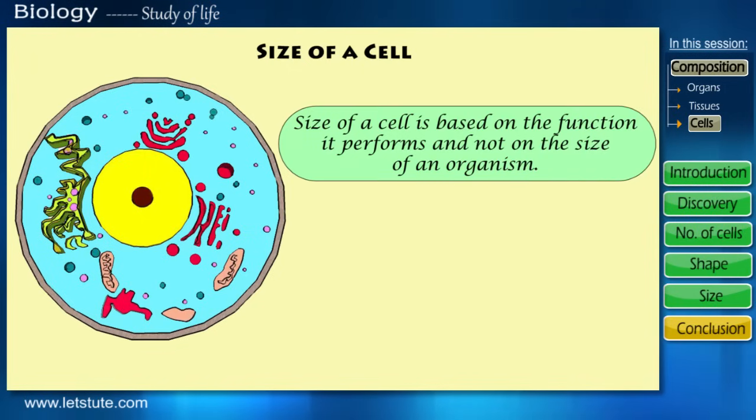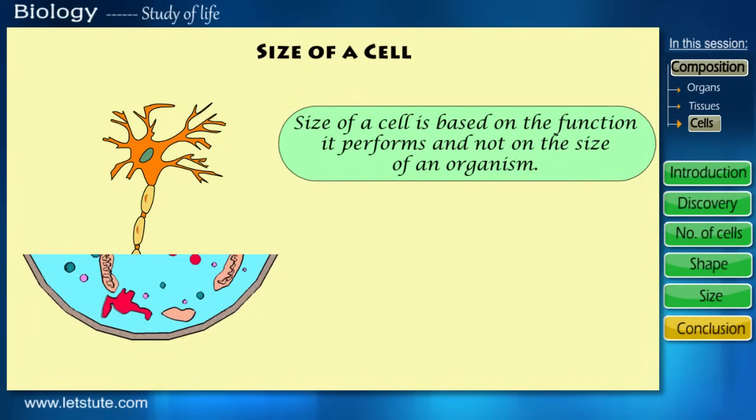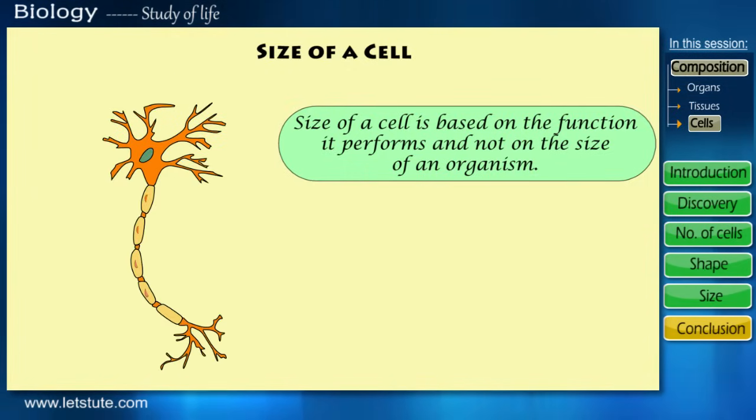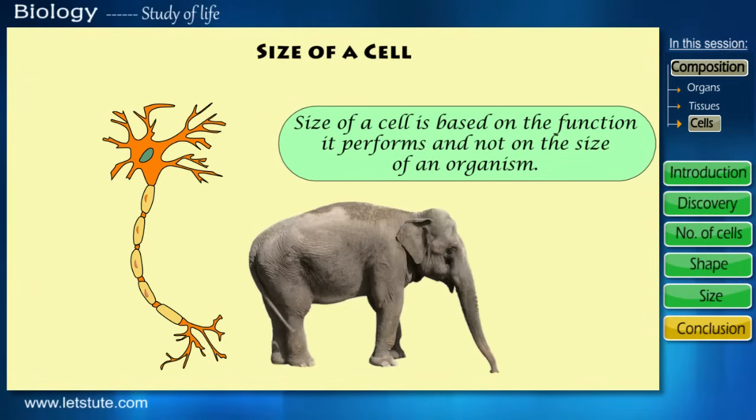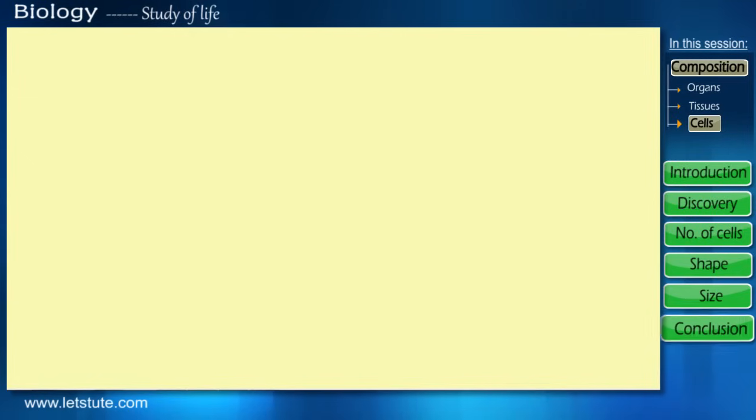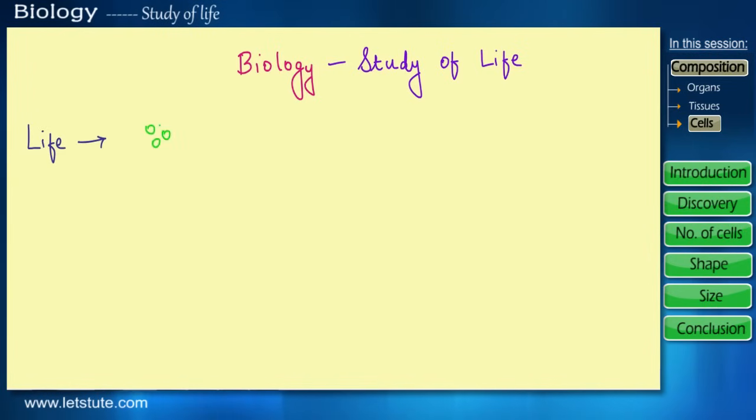But you all must know this: that the size of a cell is based on the function it performs and not on the size of an organism. So when I say nerve cell, the nerve cell will be of the same size in an elephant and a rat. Till now we have been saying that biology is all about study of life, but like we just saw, life is composed of many many cells which come together to form a living organism.